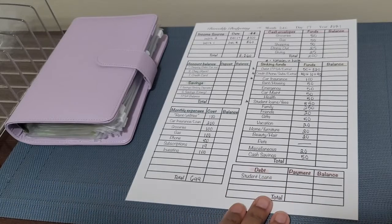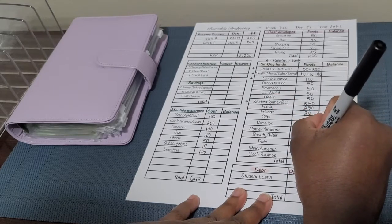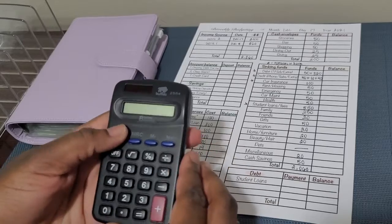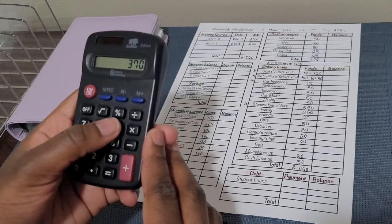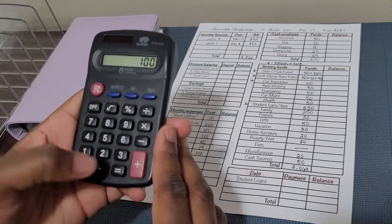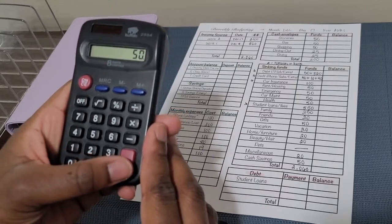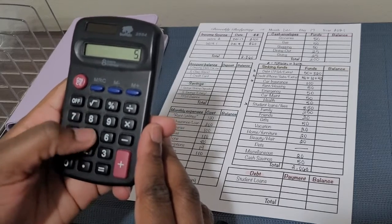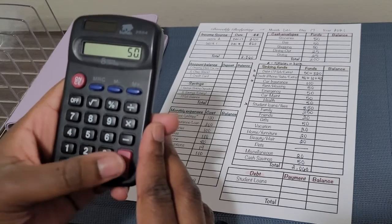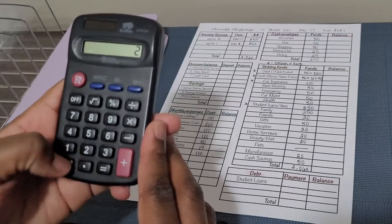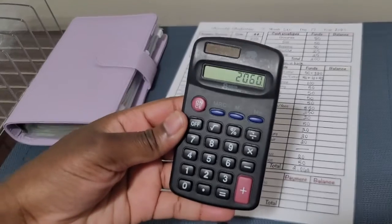So technically they should equal out to $2,060, but just to be sure. Okay, okay, so there we have it. And then we're going to move down to the remaining debt.